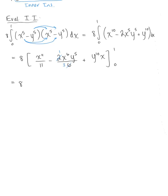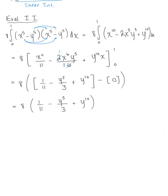So let's plug in our bounds. So we end up with, when we substitute 1 in, we're going to have 1 over 11 minus y to the 5th divided by 3 plus y to the 10th. And so we are now left with 8 times 1 by 11 minus y to the 5th divided by 3 plus y to the 10th. And so that's our inner integral.